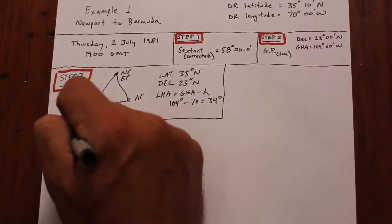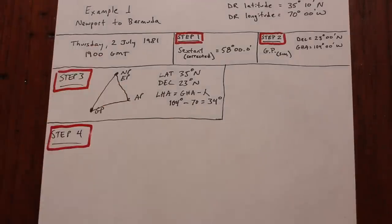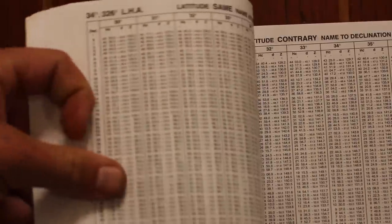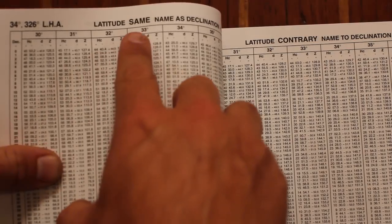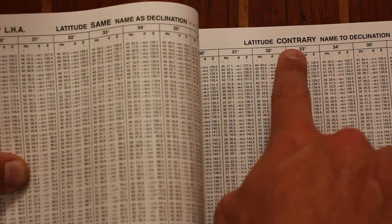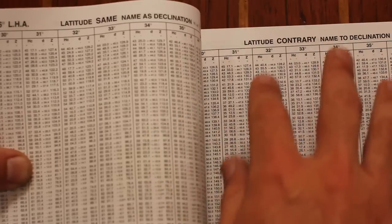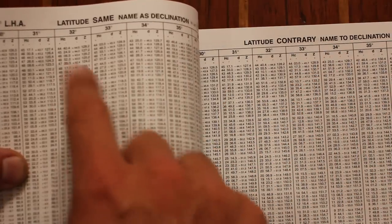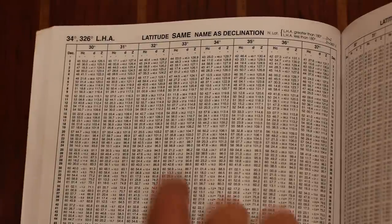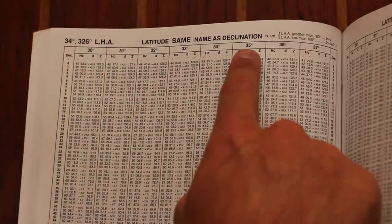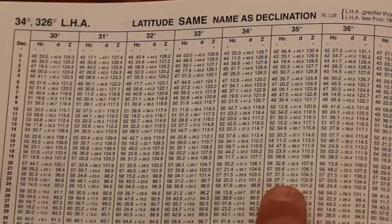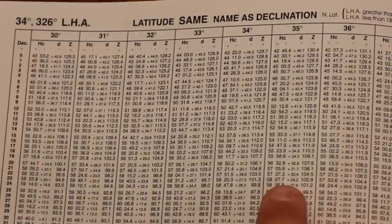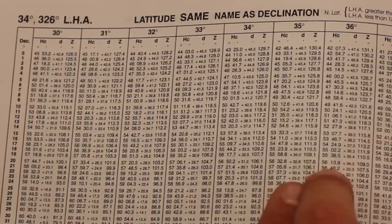Let's try and enter HO229 with these figures to see what comes out. The book's latitudes are divided, so make sure you're in the correct portion. Flip to an LHA of 34, and you'll notice there are two pages. One says latitude same as declination, and the other says latitude contrary to declination. In our case, the latitude and the sun's declination are in the same hemisphere, so we want to use the same pages. Now we find the spot on the page that corresponds to our latitude and declination, and we pull out three values: HC, D, and Z. We'll note that we're using the same page, and write our three figures down.